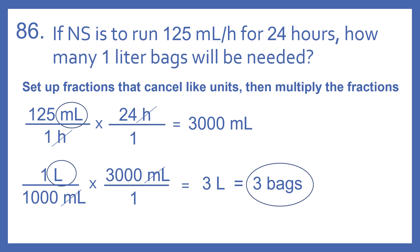So we have a rate of 125 ml per hour, and we're looking for the volume needed. So we want milliliters on the top, and we want to know how many 1-liter bags will be needed in 24 hours. So times 24 hours over 1. We have an hour on the top, an hour on the bottom. Those cancel. We're left with milliliters.